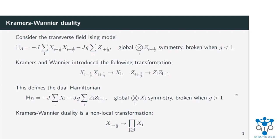Consider the transverse field Ising model, which is just one of the most simple Hamiltonians you can write down — there's some interaction term and some transverse field. This model has a global symmetry; in this particular representation it has a global sigma-z symmetry, so this tensor product of sigma-z's commutes with the Hamiltonian. And now what Kramers and Wannier did is they introduced the following transformation: if you map your XX operator to a local X, and your Z operator to a ZZ operator, you get a dual Hamiltonian which looks like this.